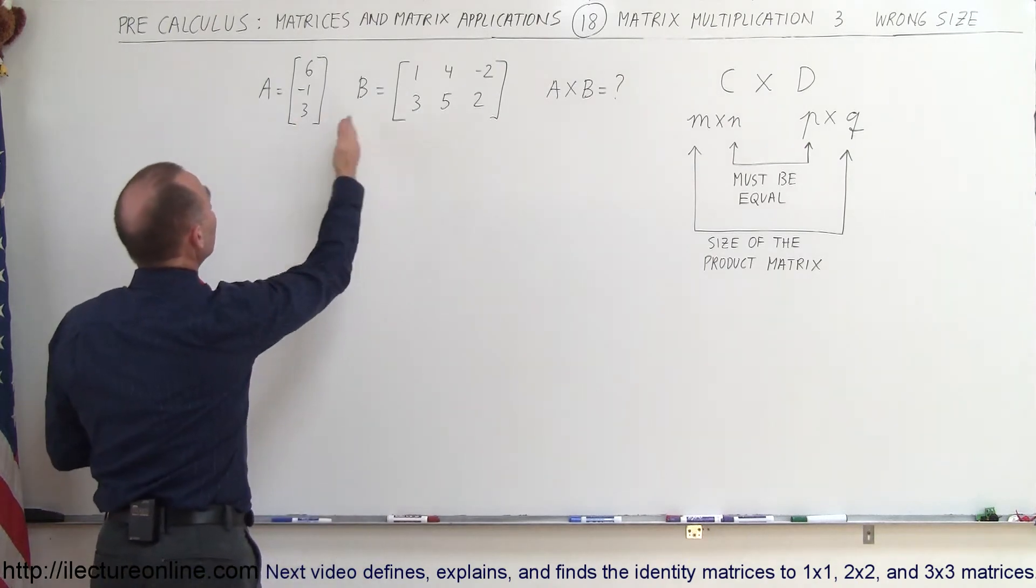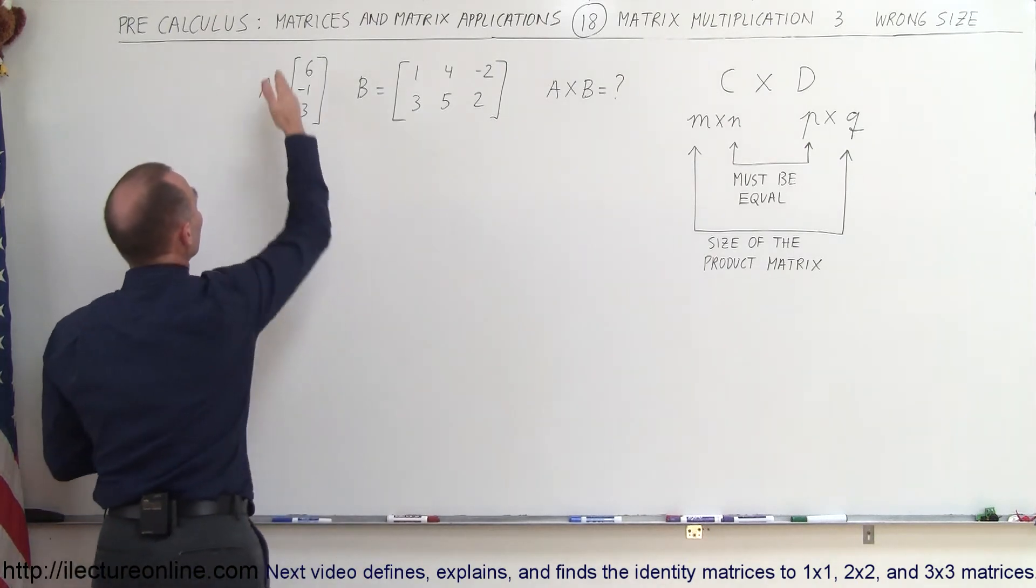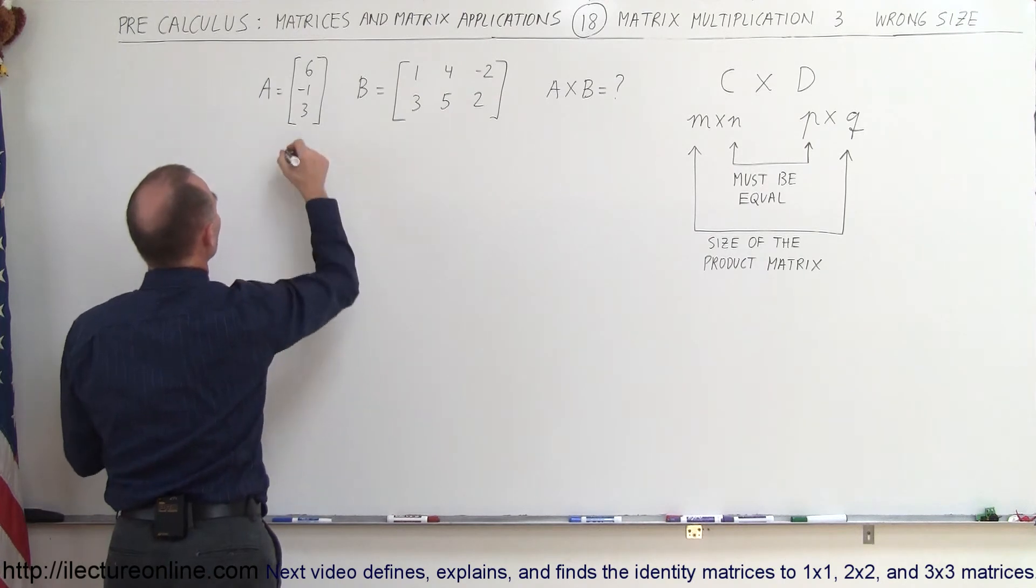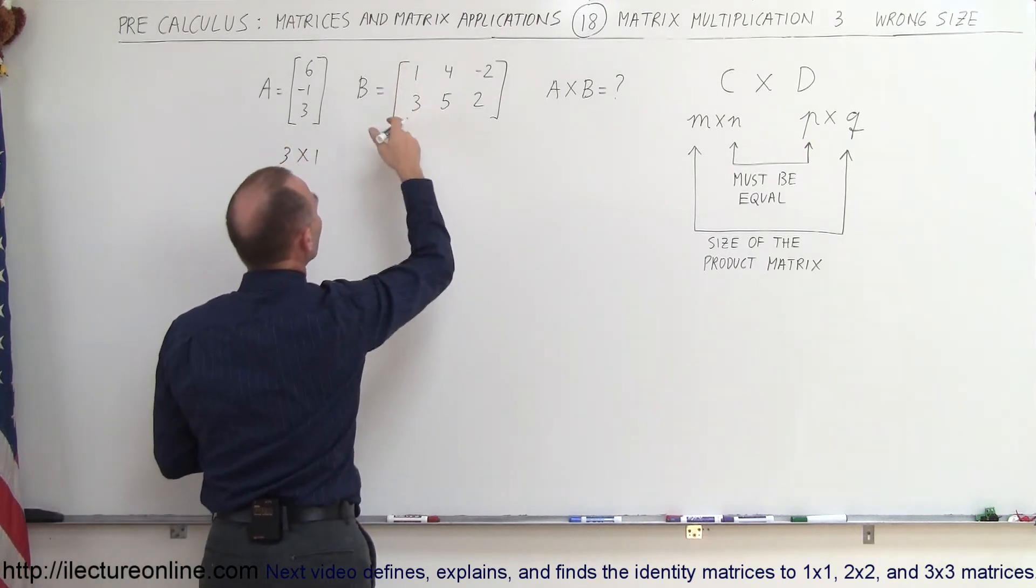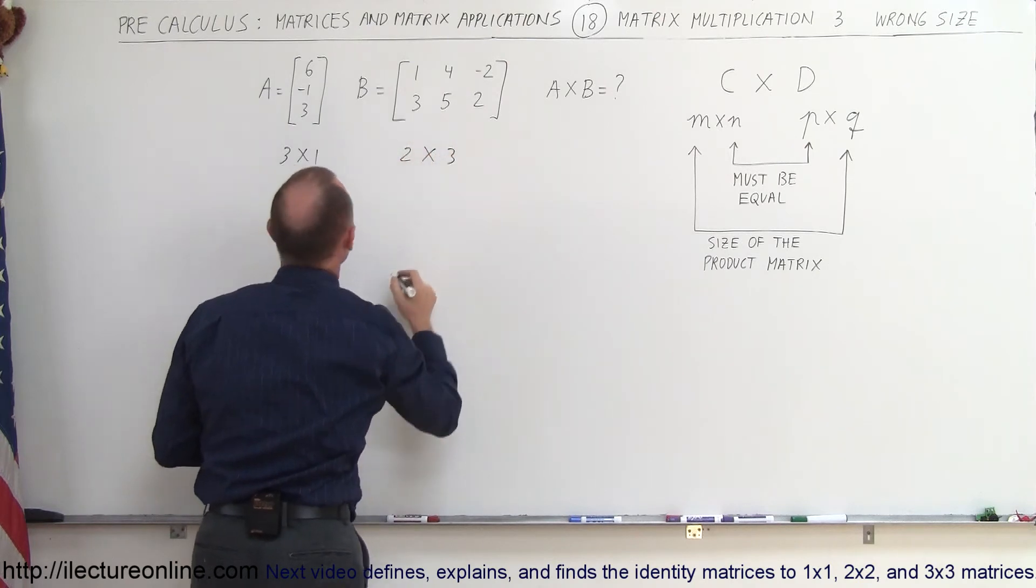So here we have two matrices, matrix A and B. Matrix A has three rows and one column, so this is a three by one matrix. Matrix B has two rows and three columns, so this is a two by three matrix.